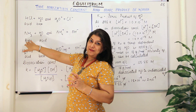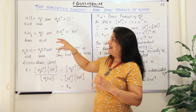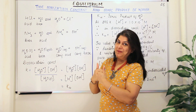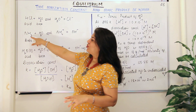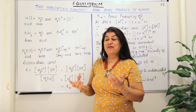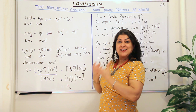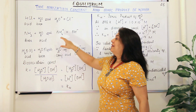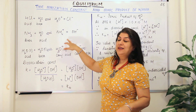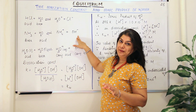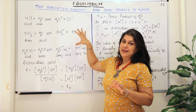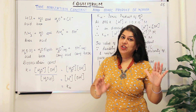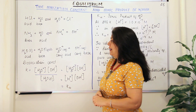Ammonia is a base and when it reacts with water, ammonia acts as the proton acceptor. Water, in comparison to ammonia, is a stronger acid, so water acts as the proton donor. Water donates a proton, ammonia turns into ammonium ion, and the OH⁻ ion is formed. So in these two reactions, water acted as an acid in one reaction and as a base in the other.